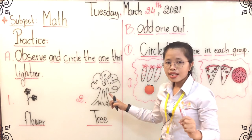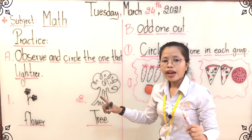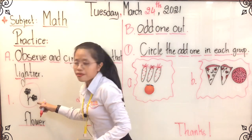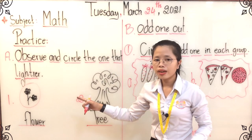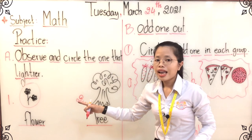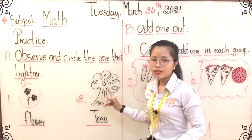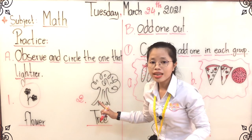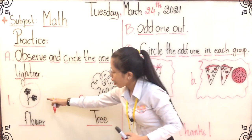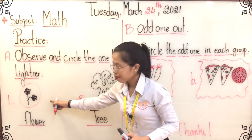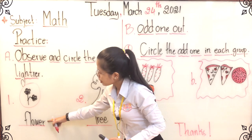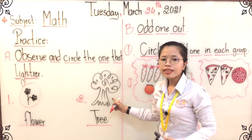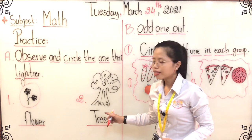So it means that the flower is lighter than the tree, and the tree is heavier than the flower. Let's practice the sentence: flower — it is lighter than the tree. And the tree — it is heavier than the flower. Once again: flower is lighter than the tree, and the tree is heavier than the flower.